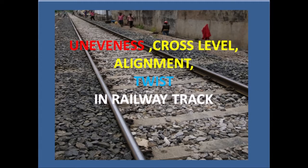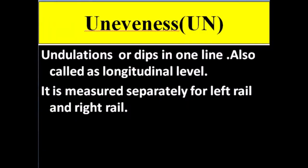Hello friends. Today's topic is about the basics of railway track geometry: what is unevenness, what is cross level, what is alignment, and what is twist in a railway track. Let us first look at the definition of unevenness.